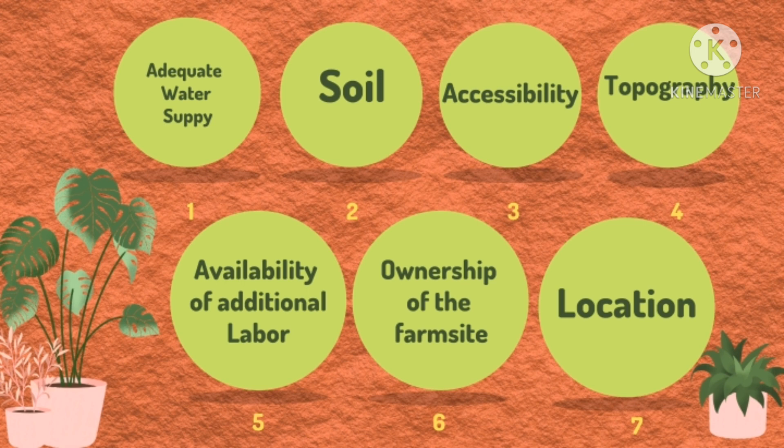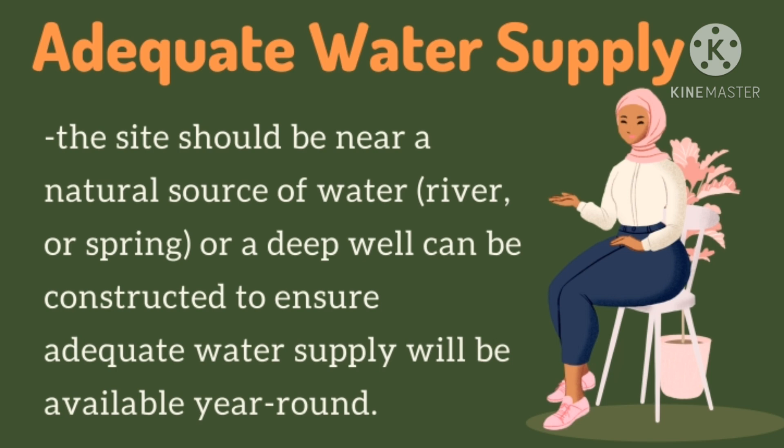First is adequate water supply. Second, soil. Accessibility. Topography. Availability of additional labor. Ownership of the farm site. And location. For adequate water supply, we all know that like humans, plants need water to survive. So the site should be near a natural source of water like a river or spring, or a deep well can be constructed to ensure adequate water supply will be available year-round.